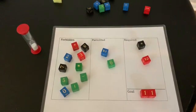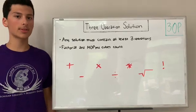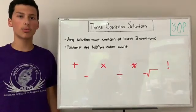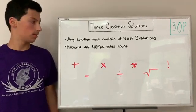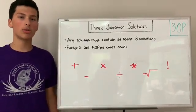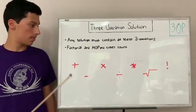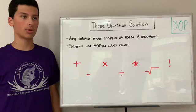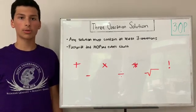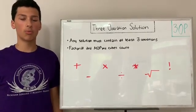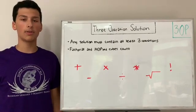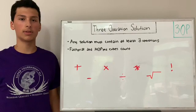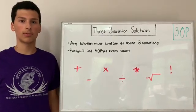The next one is three-operation solution. Any solution must contain at least three operation symbols in it. Factorial and mopped cubes do count, and here are all the operations that you can use that count for 3-op, which is pretty much every single one. But remember, your solution must still have at least two cubes in it. If you had three operations and mopped call, for example, and if you did like one factorial factorial factorial, that would not be a valid solution because it only has one cube.